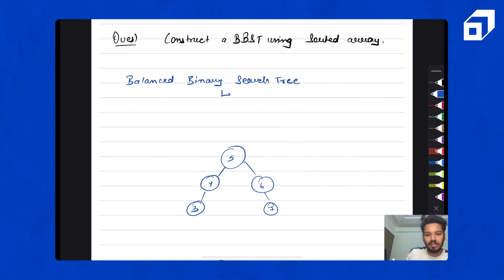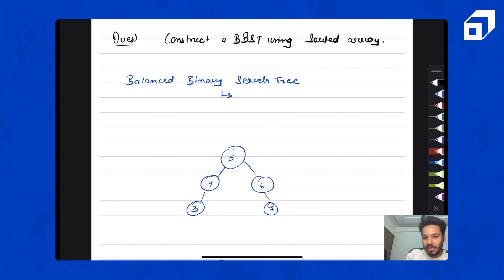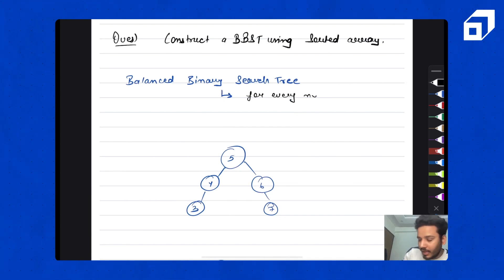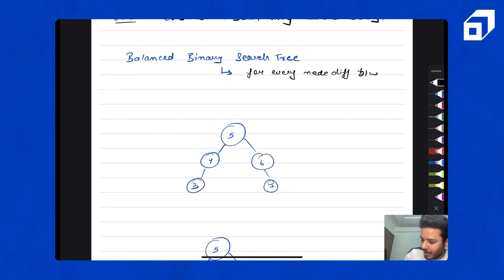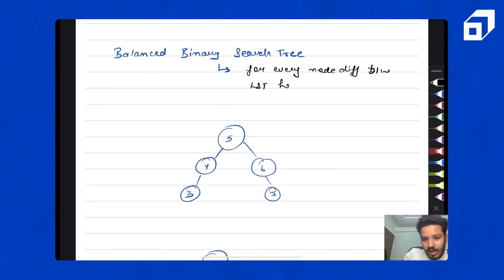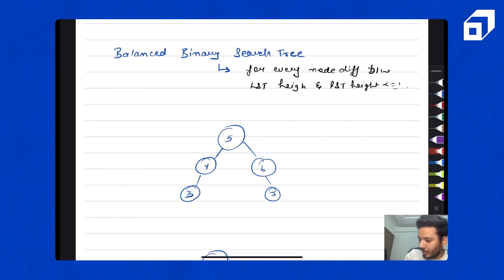So what is a balanced binary search tree? First, it should be a BST — for every node, all the nodes on the left subtree should be smaller and all the nodes on the right subtree should be greater. And what makes it balanced? Apart from being a BST, for every node, the absolute difference between left subtree height and right subtree height should be less than or equal to 1.